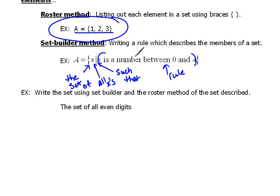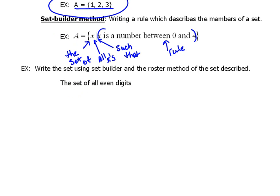Let's do an example here together. This one says, write the set using set-builder and the roster method of the set described. So, we want to write the set of all even digits. Let's do the roster method first. Remember, we have to use braces to mean the set of. And, we're going to list out each one of the items. Roster method is listing. So, the set of all even digits would be 2, 4, 6, 8. And, those would be our even numbers.